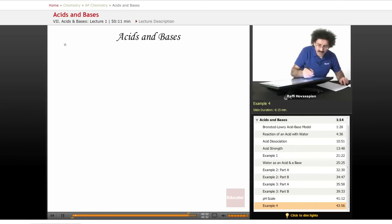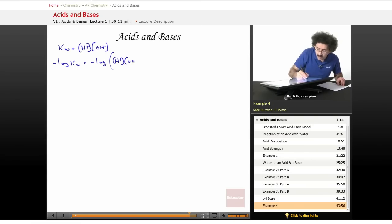We said that KW is equal to the hydrogen ion concentration times the hydroxide ion concentration. Let's take the negative log of both sides. Negative log of KW is equal to negative log of this whole thing, H plus OH minus. Well, negative log of KW is PKW.